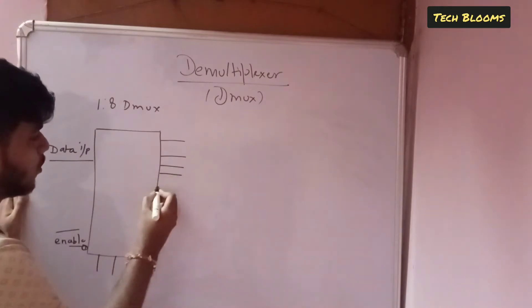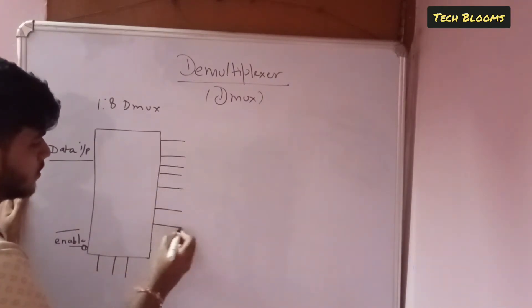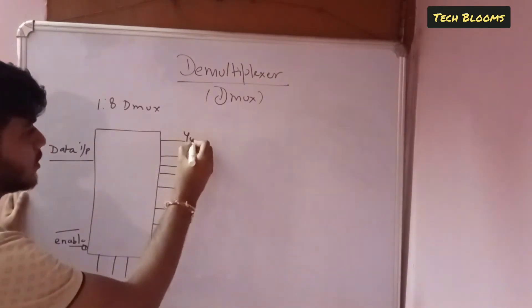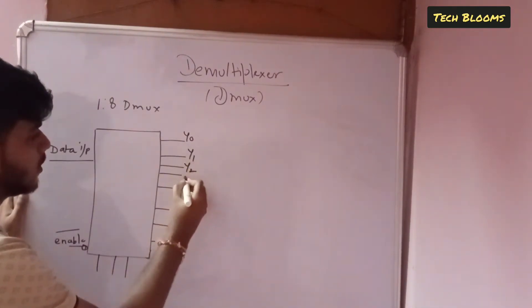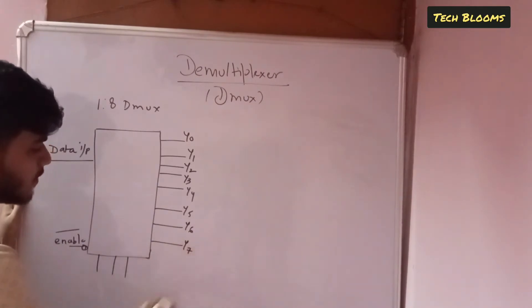So that is y0, y1, y2, y3, y4, y5, y6, y7.